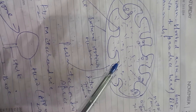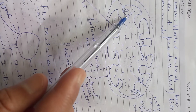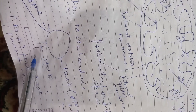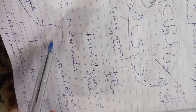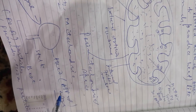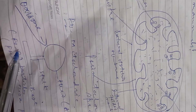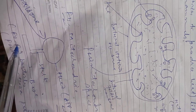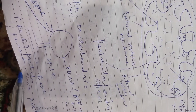The oxysome lies almost perpendicular to the cristae and has a structure consisting of a base, a stalk, and a head. The head is the region which contains ATPase enzymes, and these oxysomes are known as F0, F1 particles or Fernandes-Mora particles.